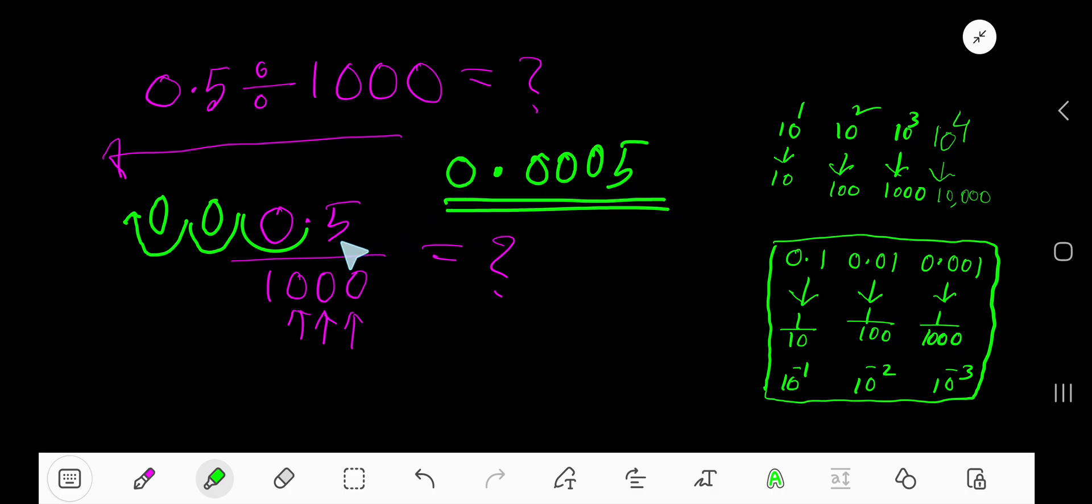Division means repeated subtraction. In repeated subtraction, the value of the dividend will be decreased.